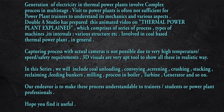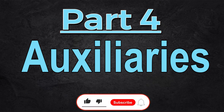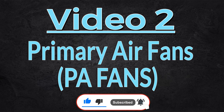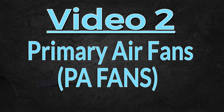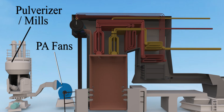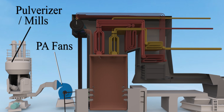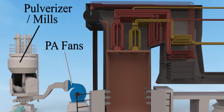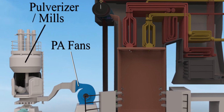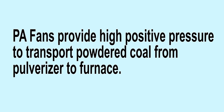In our previous video we discussed forced draft fan, often called FD fan. This video is about PA fan, that is primary air fan. PA fans are centrifugal fans and are located at the inlet of the pulverizer, also called mill. They provide high positive pressure to transport powdered coal from the pulverizer to the furnace.